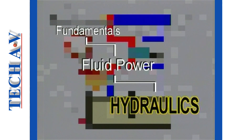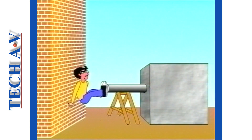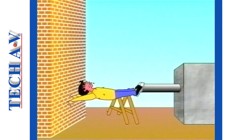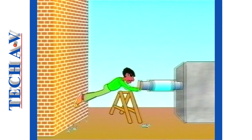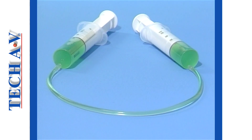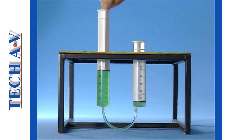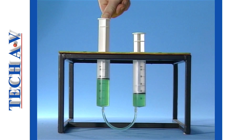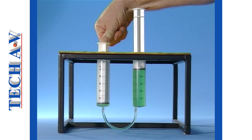Fluid power is the term used to describe the transmission of energy or work through a fluid medium, instead of through mechanical drives. This fact can be demonstrated using simple medical syringes, plastic tubing, and some colored water. With the two syringes connected via the tubing, the basic principle of hydraulic action can be demonstrated — when one of the plungers is forced down, the opposite plunger moves.